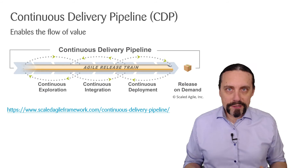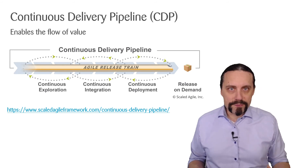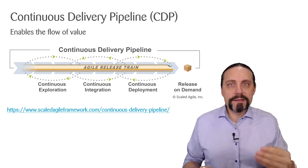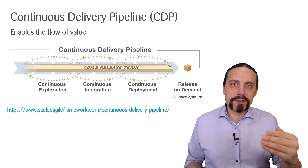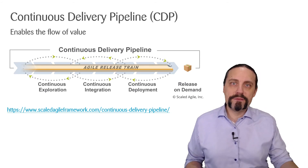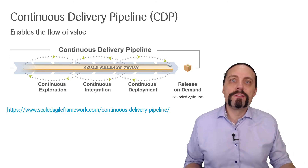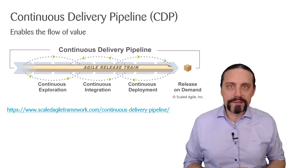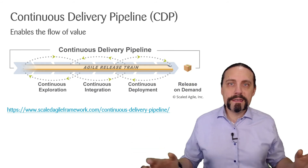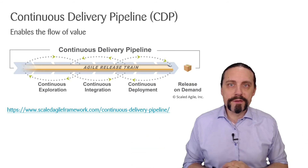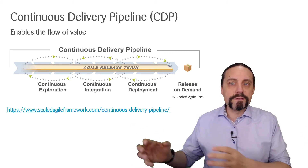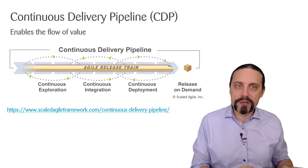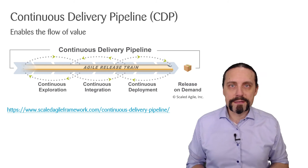After we have deployed the software into the production environment, the business can decide whether we are going to release the software, enable the feature, or if we are going to wait. So this is the continuous delivery pipeline, which consists of continuous exploration, continuous integration, continuous deployment, and release on demand.